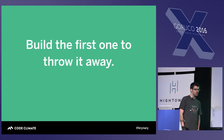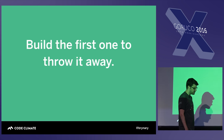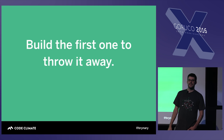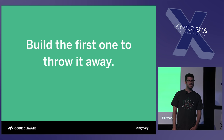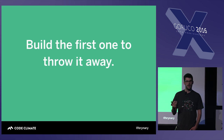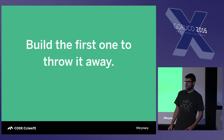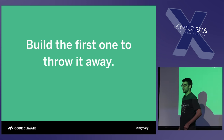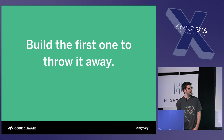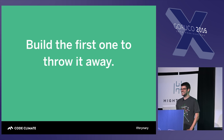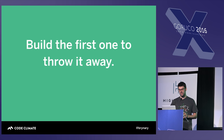Another example is building the first one to throw it away. There are situations where you have a problem to solve as a developer and you may realize going in that it's hard to know the exact approach you'll need to take. In those situations, it can be useful to build a version of that code to enhance your understanding, with a plan to throw it away at the end. Sometimes this is called a spike. The key with a spike is to actually throw it away — spikes have a tendency to be created with the understanding they'll be discarded, and then end up in production.